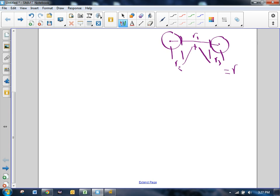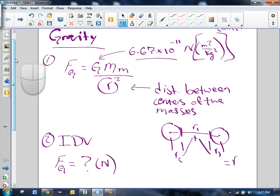The masses will come from the problem as well as the separating distance. Don't forget to square it, that's really important. So the second step with any one of these problems is what I like to call IDV, or identify the variables. F sub G, the force of gravity, is what we're looking for, so that's going to be a question mark.